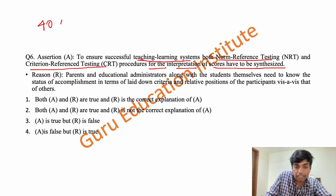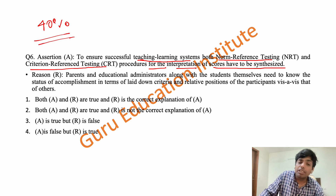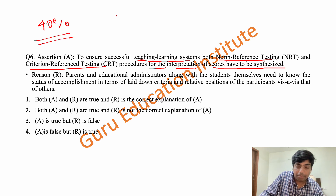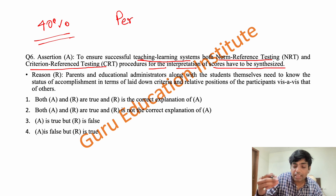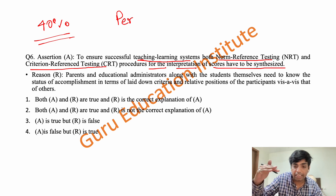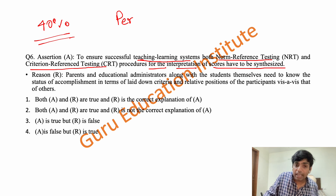For example, if 40 percent is set as criteria and a child scores that, they will pass. So we have set a criteria. In norm reference testing, we give a percentile score — we calculate ranking, like first number, second number, third number, fourth number.